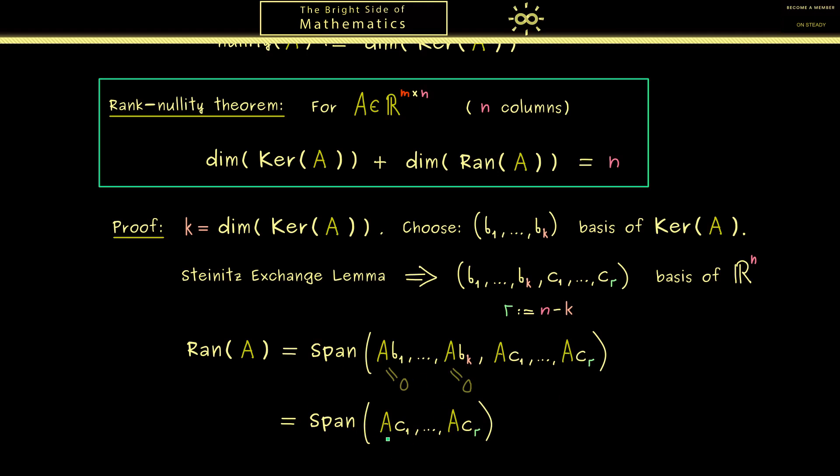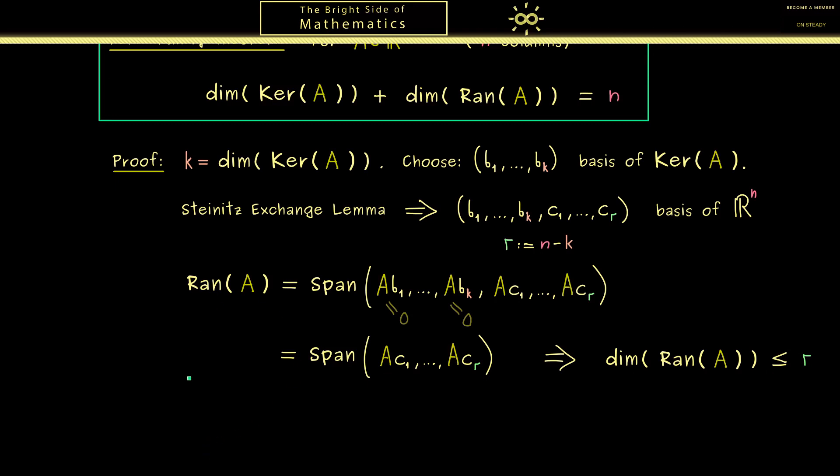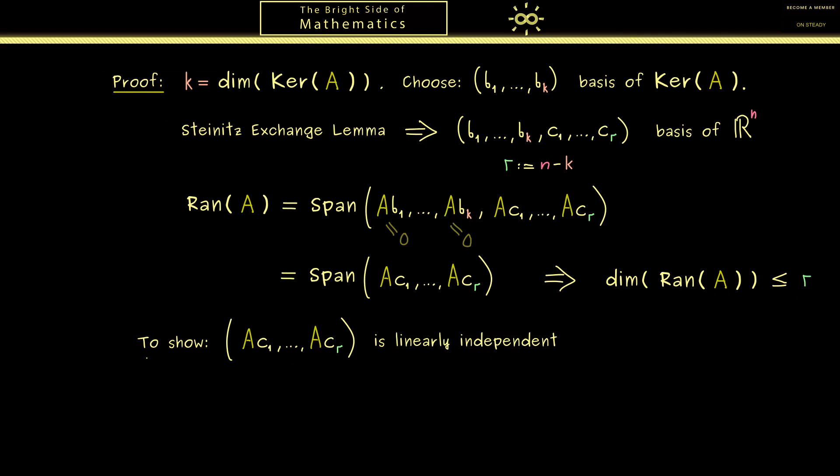So you see, in the span here, we only have r vectors, which means the dimension of this span is definitely less than or equal to r. And with this conclusion, we have shown the first part of the proof. So please recall, we want to show that this dimension is exactly r. And now you see, we have already one inequality here. Now, in order to show the equality here, we now have to prove that these vectors here are linearly independent. So let's write that down, and then we do it. So this is our next step here, we show that this family is linearly independent.